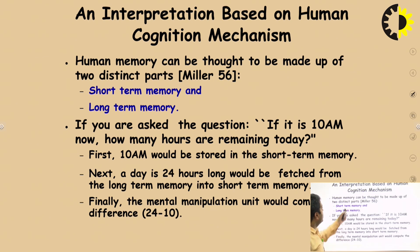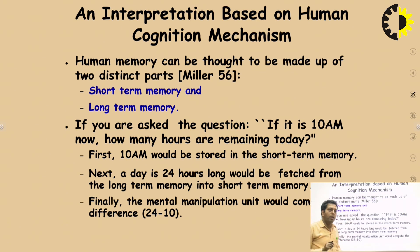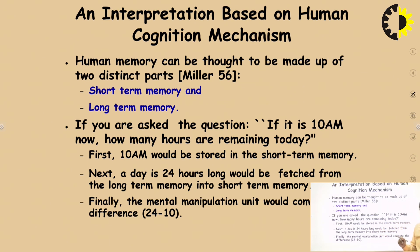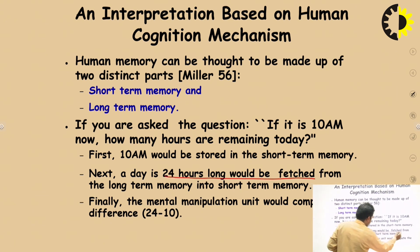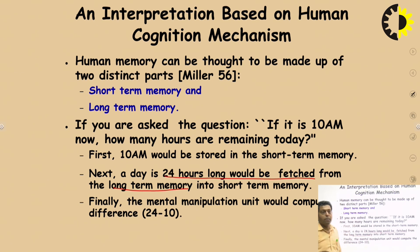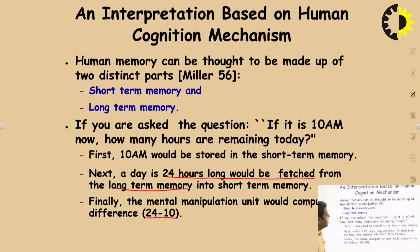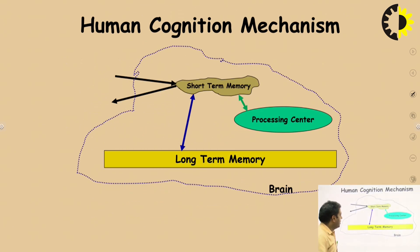There is an interpretation based on human cognition: human beings have two distinct memory types — short-term memory and long-term memory — and a processing center. For example, if someone asks what time remains in the morning and the current time is 10, you know from long-term memory that a day has 24 hours, and from short-term memory that it is 10 o'clock, so you can do the mental calculation: 24 minus 10. This is how the human brain works with short-term memory, long-term memory, and a processing center.